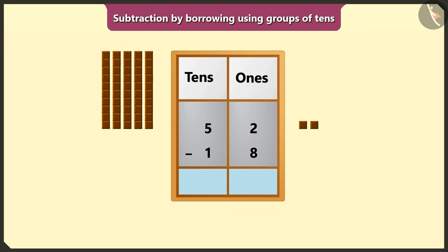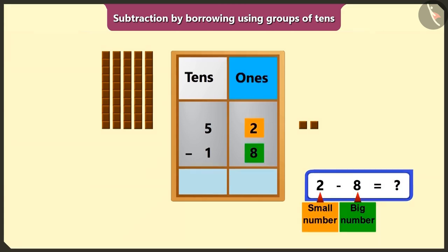So first of all, we will perform subtraction of the numbers in the box of ones. But here, 2 is smaller compared to 8. So how can we subtract a big number from a small number? We cannot subtract a big number from a smaller number.